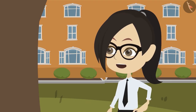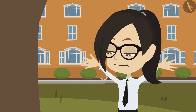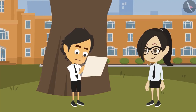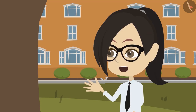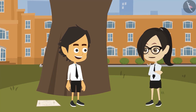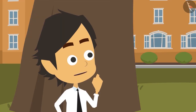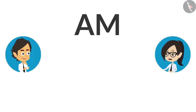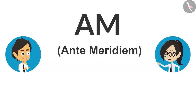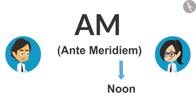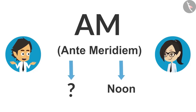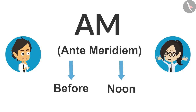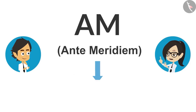The full form of PM is post meridiem. Meridiem means noon and post means after, so PM means afternoon. Really? Yes! Earlier I too used to get confused, but since I started keeping the full form in my mind I have no confusion. The full form of AM is ante meridiem. Meridiem means noon, and ante is a Latin word which means before, so AM means before noon.